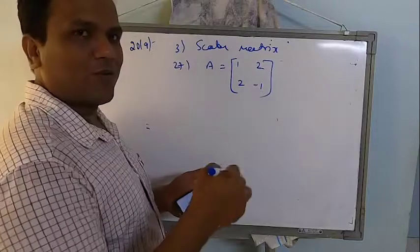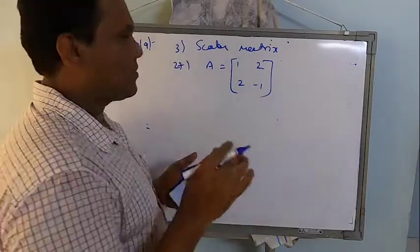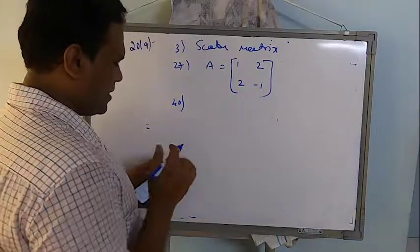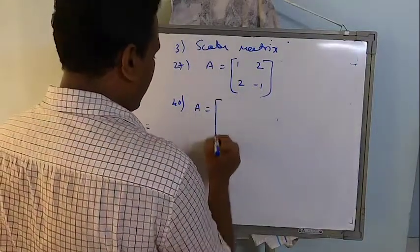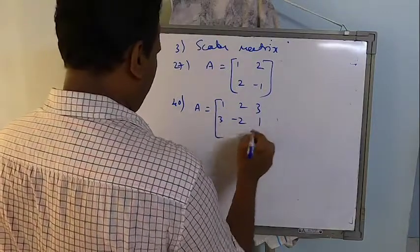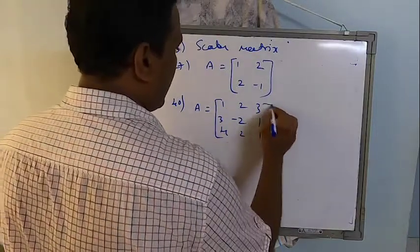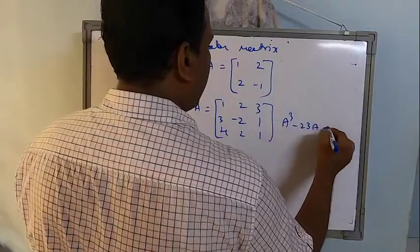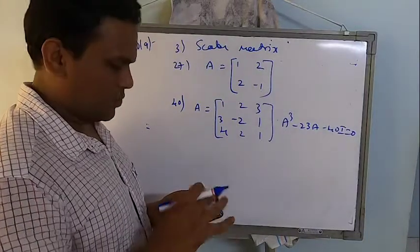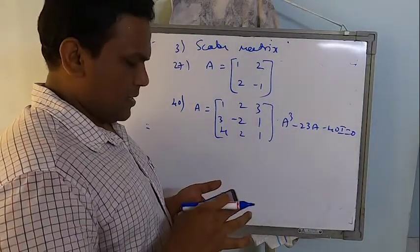Clear? And I am not going to work it out. I have done enough number of problems already. I think it is better if I just tell you what are the problems given there. And in problem number 40, A is equal to 1, 2, 3, 3, minus 2, 1, 4, 2, 1. Then prove that A cube minus 23A minus 40I is equal to 0. I have done this already, so you can manage with this.